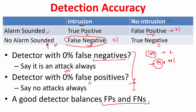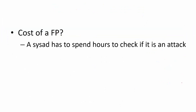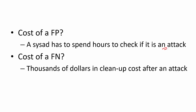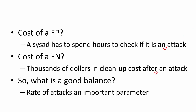What is the cost of a false positive? That is where there is no intrusion but you are sounding an alarm. The cost is that someone now has to spend time digging into all the records to figure out what happened — this results in a sysad having to spend hours checking whether it is an attack or not. Similarly, there is a cost of a false negative — there is an intrusion and you did not sound an alarm, so you have to spend thousands of dollars in cleanup. In fact, your IDS did not do its job, so that is an even bigger problem.